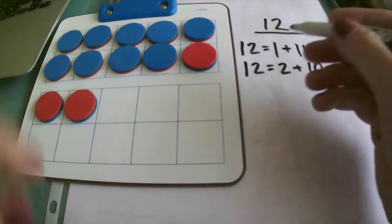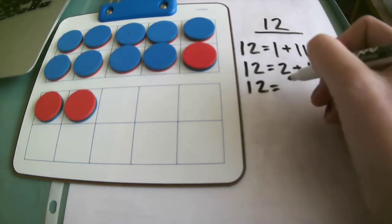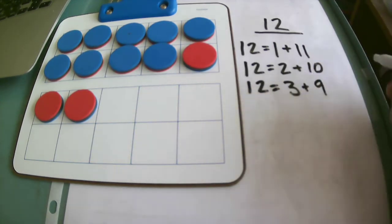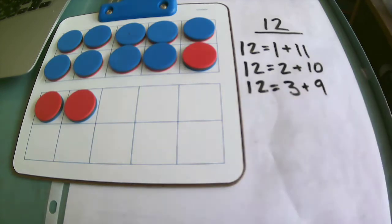Next I have 3 reds and 9 blues, because I know that 9 and 3 together give me 12.